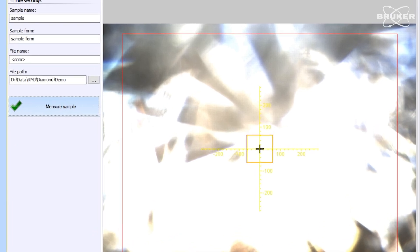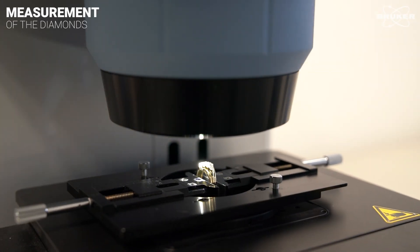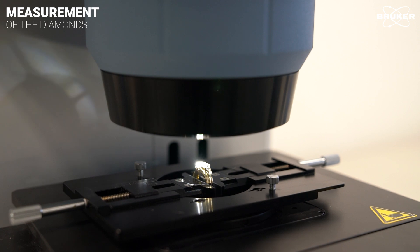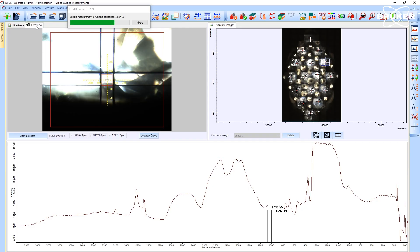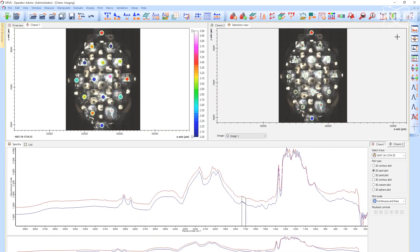And we're ready to start the measurement. One click later, every measurement point is automatically approached and measured. After two minutes, the spectra of the diamond ring sample are shown.